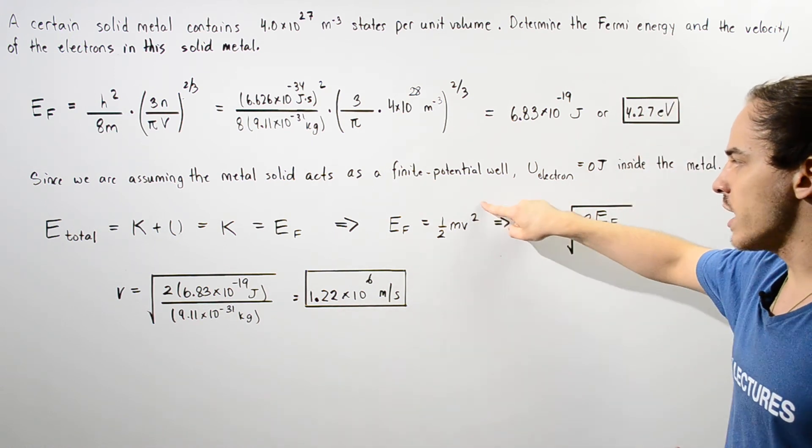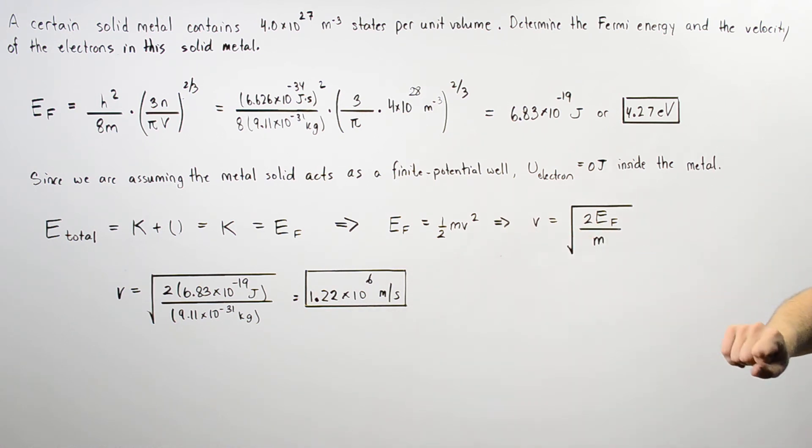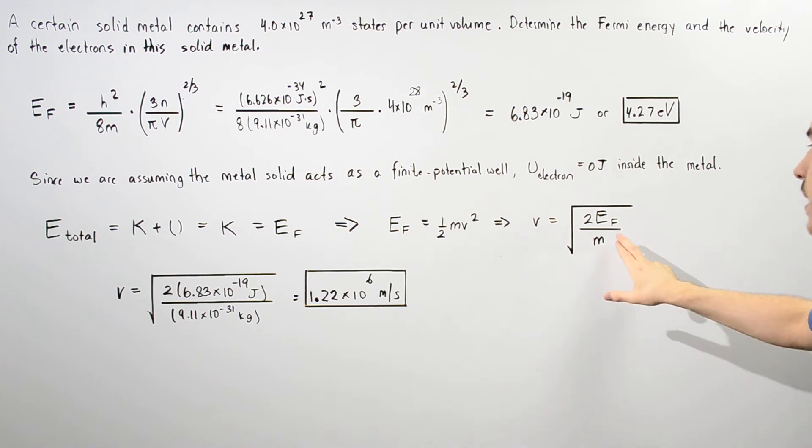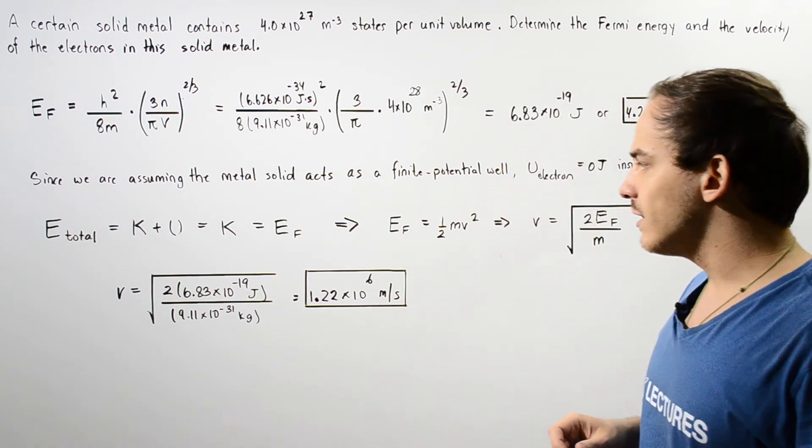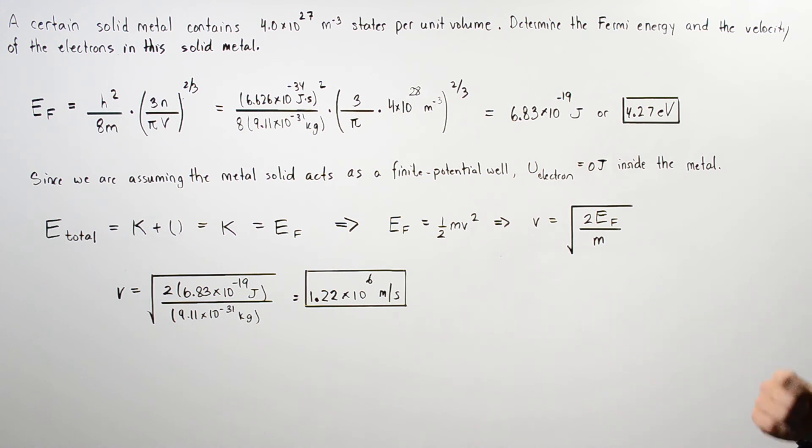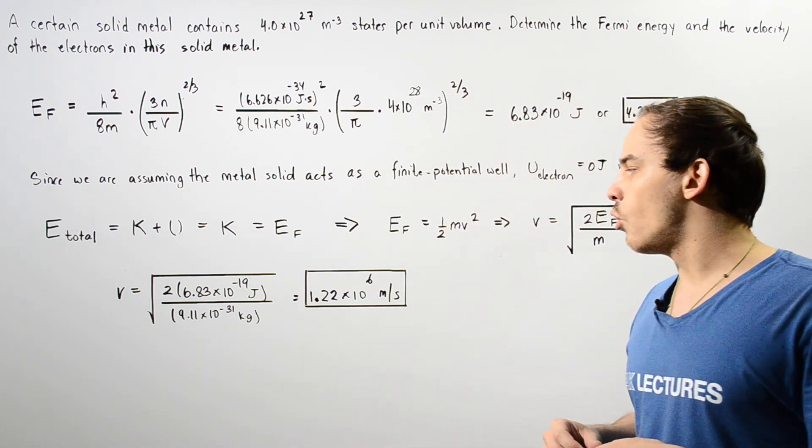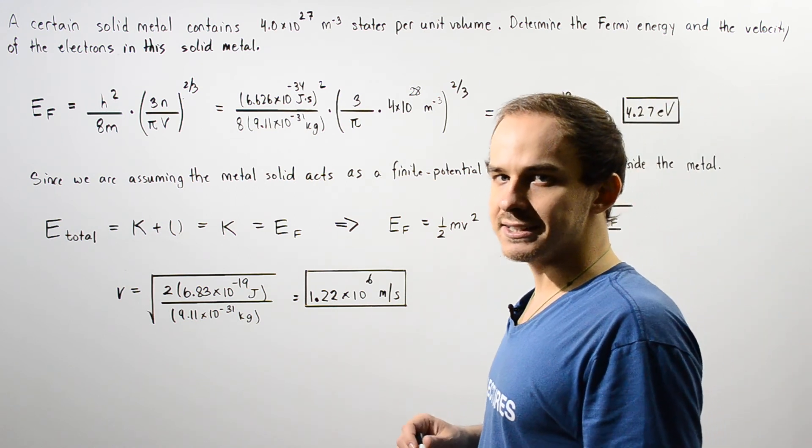We plug in our values and we find that the velocity of our electron is equal to about 1.22 times 10 to the 6 meters per second.